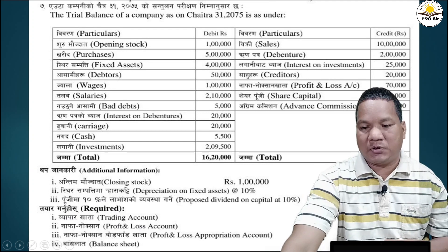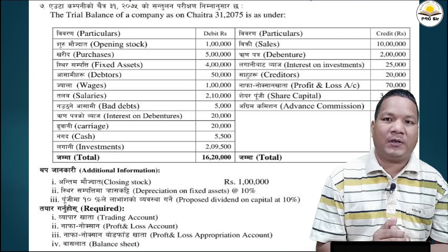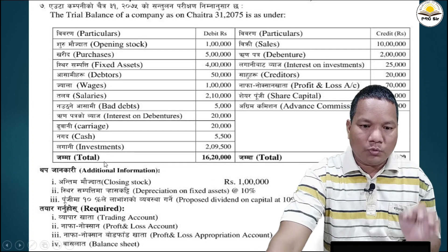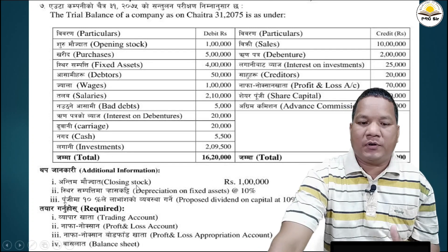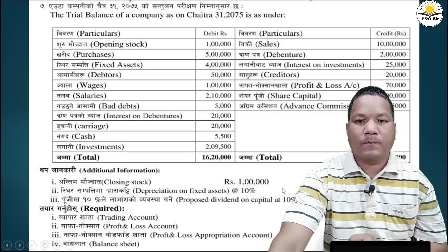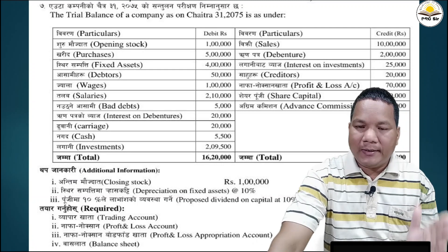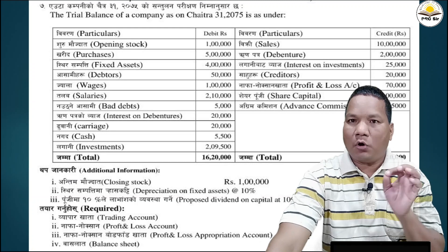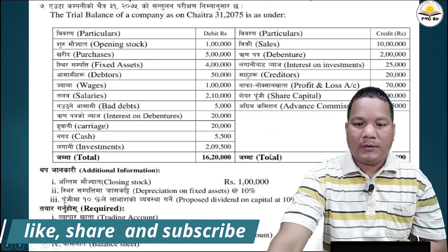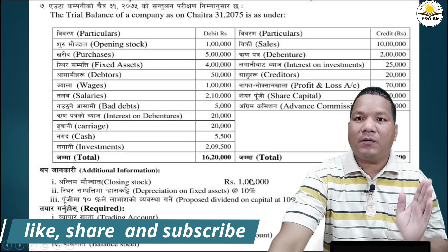This is your final account - very simple. Let's start the solution. For adjustments: closing stock 1 lakh - closing stock goes to the trading account credit side, and also appears as an asset on the balance sheet.